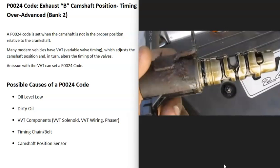The next possible cause is some kind of issue with the variable valve timing system — a failed component such as the variable valve timing solenoid, the wiring going to the solenoid, or the phaser. These VVT solenoids are a common problem, especially if the oil hasn't been changed regularly, because oil needs to flow through them to work properly. Old, dirty oil can clog them up and cause problems.